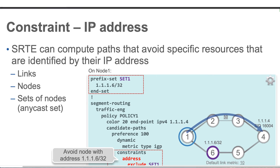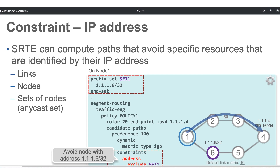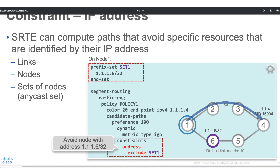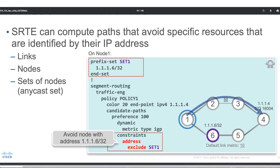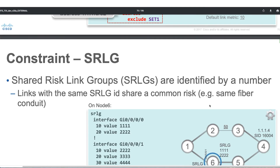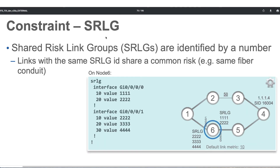We can also give a constraint based on IP address. We configure a prefix set, call it set 1, and say constraint address exclude set 1. That means any node that has that particular IP address is simply excluded. It will go ahead and probably pick only the top paths.